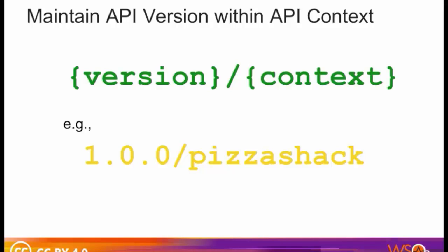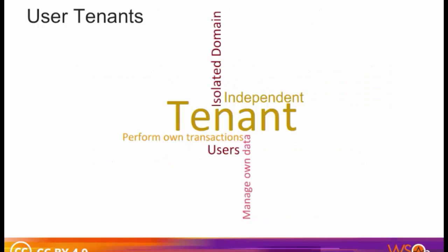API Manager allows you to define the version before the context, such as 1.0.0/service-name, allowing grouping of APIs based on versions. You can define the API's version as a parameter of its context by adding the version parameter — for example, {version}/phone-verify. The API Manager assigns the actual version of the API to the version parameter internally, allowing you to group your APIs according to versions. A tenant is an isolated domain where users can manage their own data and perform their own transactions without being affected by actions carried out in other domains.